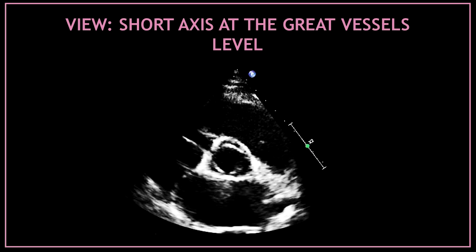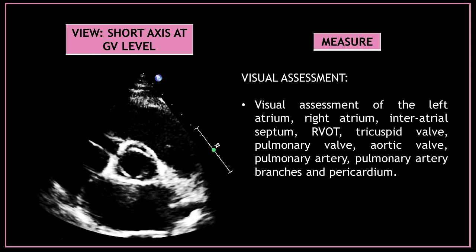Next we have the parasternal short axis view at the great vessels level. First obtain this view and then do a visual assessment of all the structures visualized. Analyze what you see regarding the left atrium, right atrium, interatrial septum, right ventricular outflow tract, tricuspid valve, pulmonary valve, aortic valve, pulmonary artery, pulmonary artery branches, and pericardium.